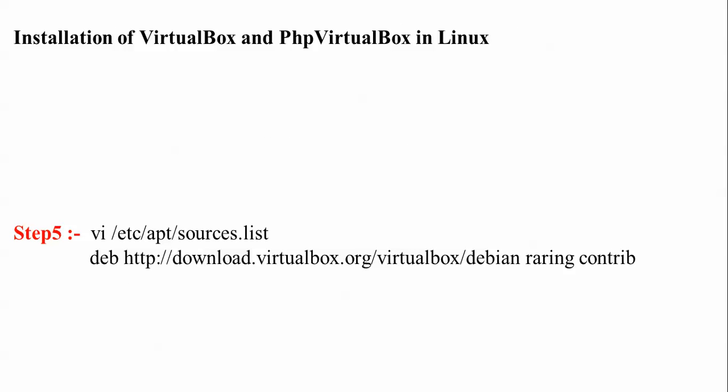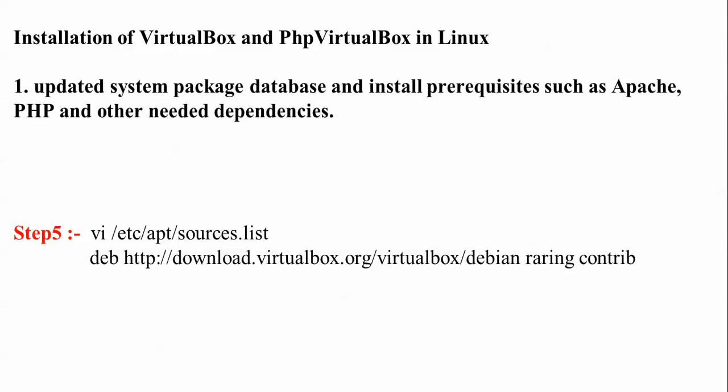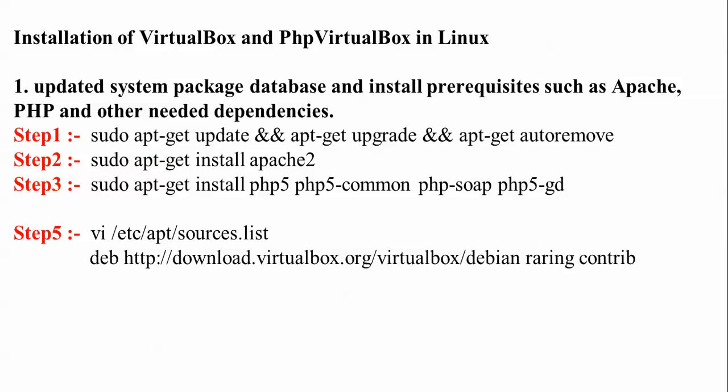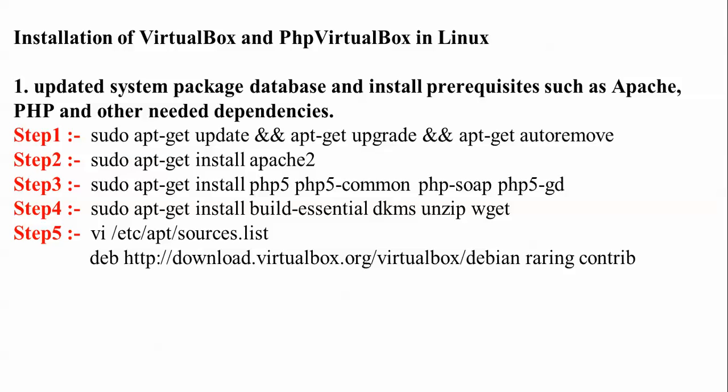Now I'm going to start the installations. First I will download VirtualBox and phpVirtualBox on my Ubuntu. The steps are: step one — update your Ubuntu packages; step two — install Apache; step three — install PHP and its dependencies; step four — install build-essential; step five — open the sources list and add the VirtualBox repository line.